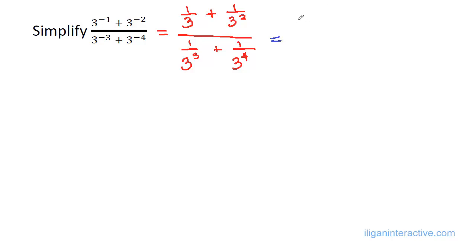The LCD for the first one will be just 3 squared, or simply 9, and this will become 3. 3 squared divided by 3 is 3, times 1 is 3, plus 1.